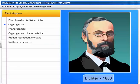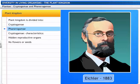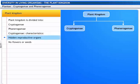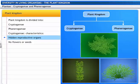In 1883, Eichler classified the plant kingdom into two sub-kingdoms: Cryptogamae and Phanerogamae. The sub-kingdom Cryptogamae includes plants with hidden reproductive organs. These plants do not bear flowers or seeds.